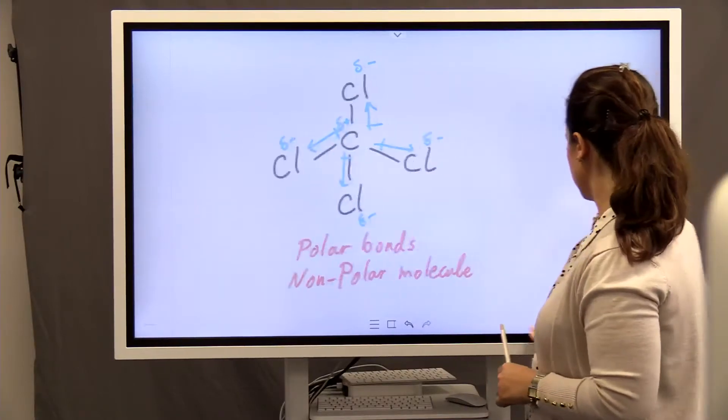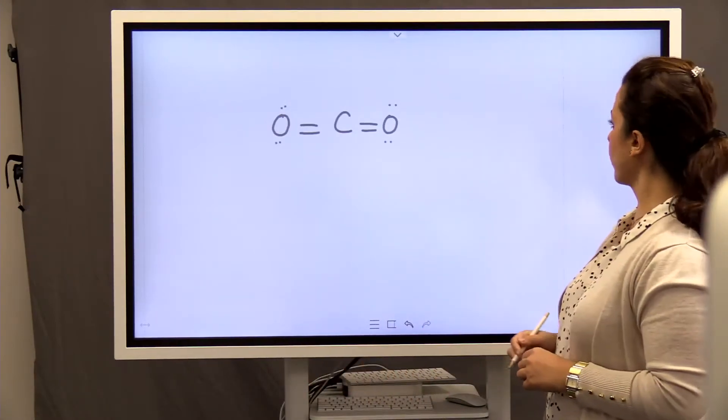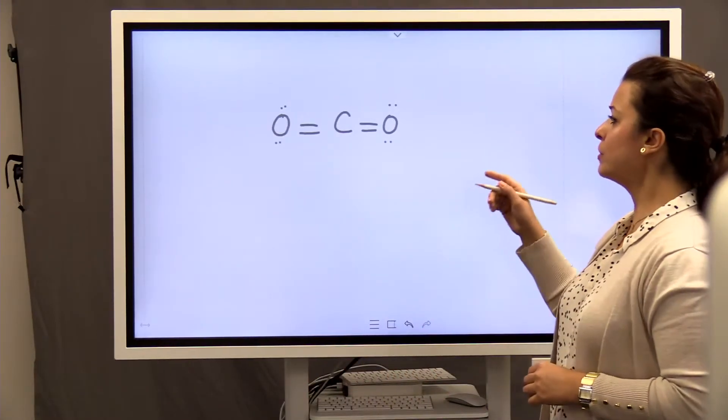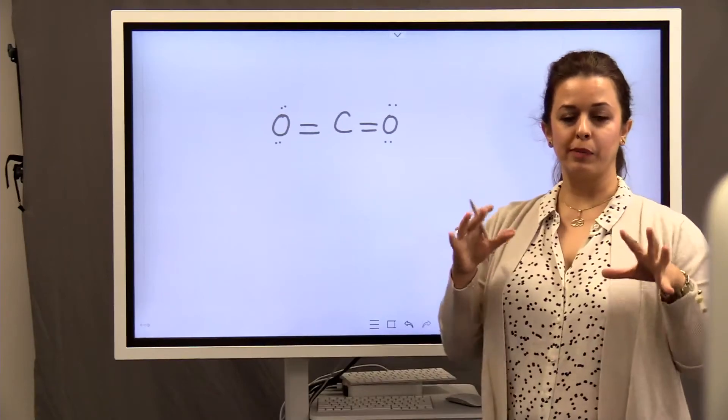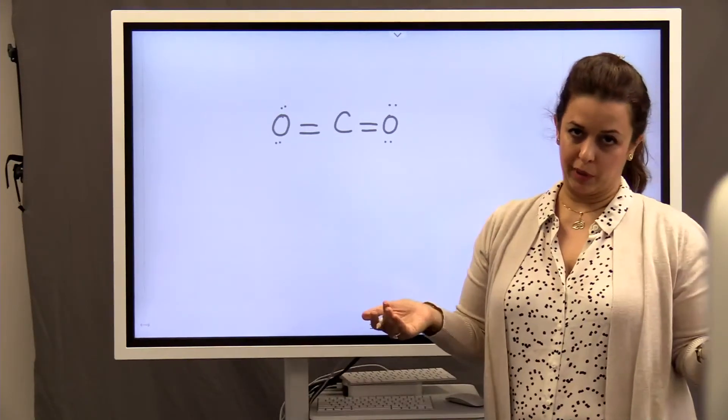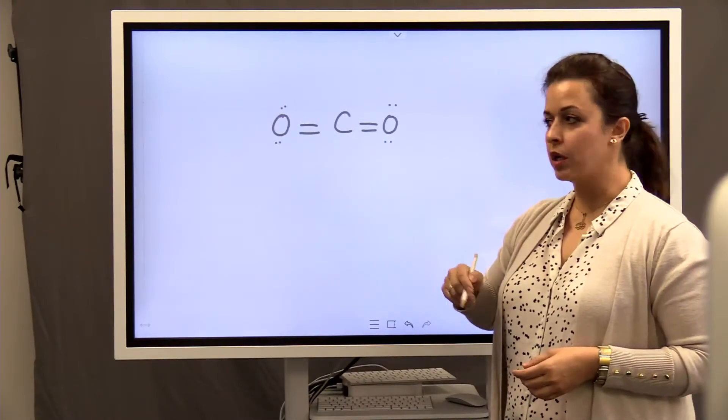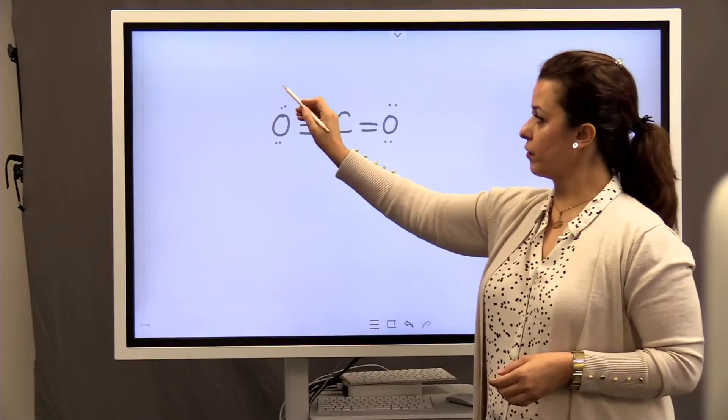So let's go to the next molecule, which is carbon dioxide. Carbon dioxide. Let me tell you again, double bonds don't have any role in polarity. So between carbon and oxygen, which one is more electronegative? Oxygen, right?